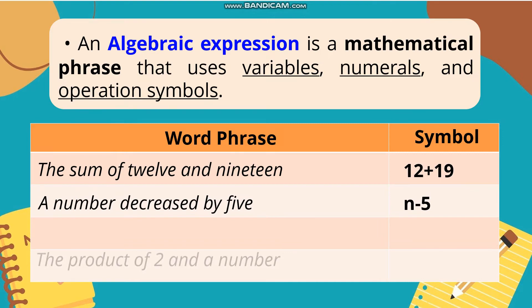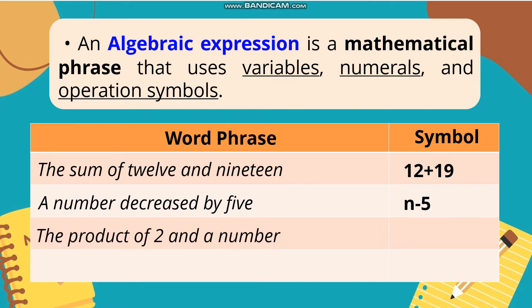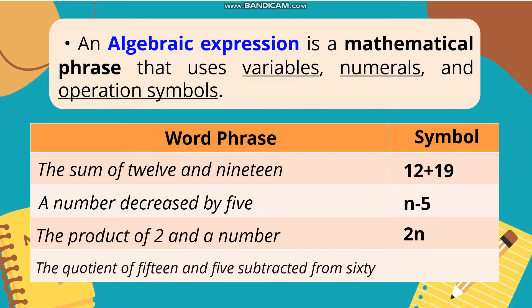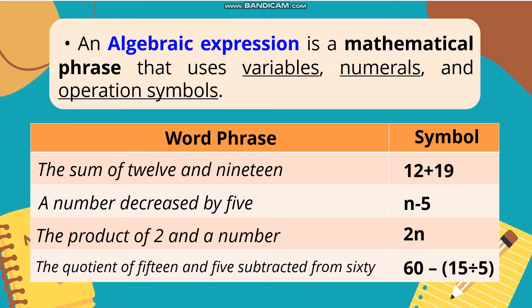Number 3 — word phrase: the product of 2n and a number. Symbol: 2n. Sa algebraic expression, hindi na inilalagay ang multiplication sign — understood na kapag 2n, ibig sabihin 2 times n. Number 4 — word phrase: the quotient of 15 and 5 subtracted from 60. Symbol: 60 minus 15 divided by 5. Ang 60 ay nauna dahil sa word na 'subtracted from' — ibig sabihin, ima-minus sa 60 ang quotient ng 15 divided by 5.